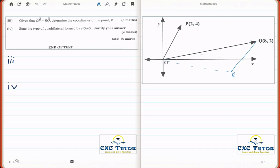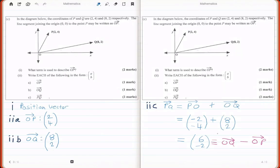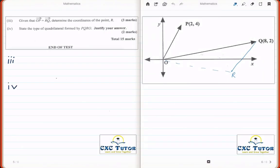And we just worked that out in the last question where we said OQ minus OP is equal to 6 minus 2. Therefore, the coordinate of R is 6 minus 2.